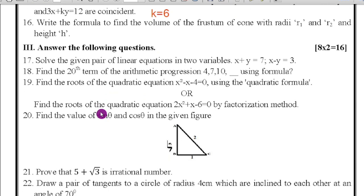Next we will shift to the third main: answer the following questions. Here two marks questions will be there. Question number 17: solve the given pair of linear equations in two variables. Here they are given the equations, you can use any method - elimination method or addition method or cross multiplication method. Question number 18: find the 20th term of the arithmetic progression 4, 7, 10 using formula. Here aₙ = a + (n-1)d. Because they are asking the 20th term, they are not asking sum of the 20th term. Read the question properly and answer the questions.